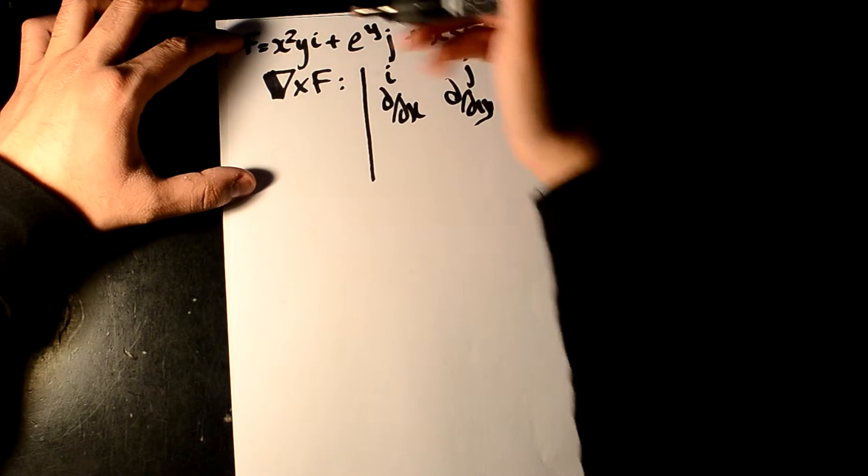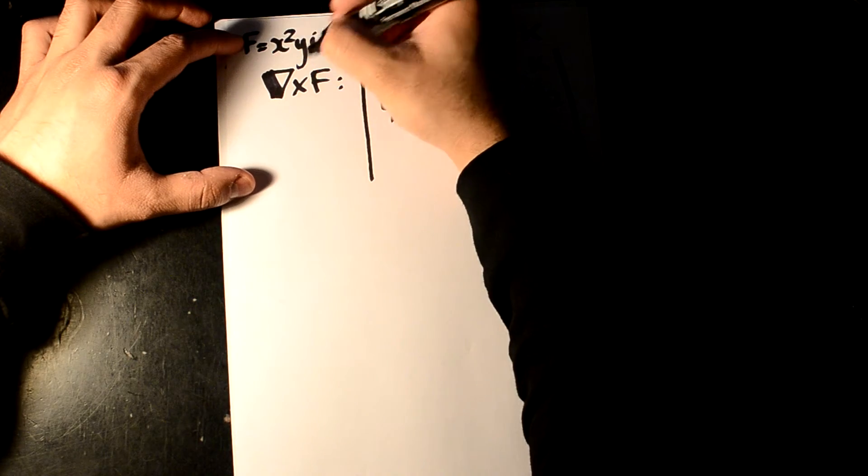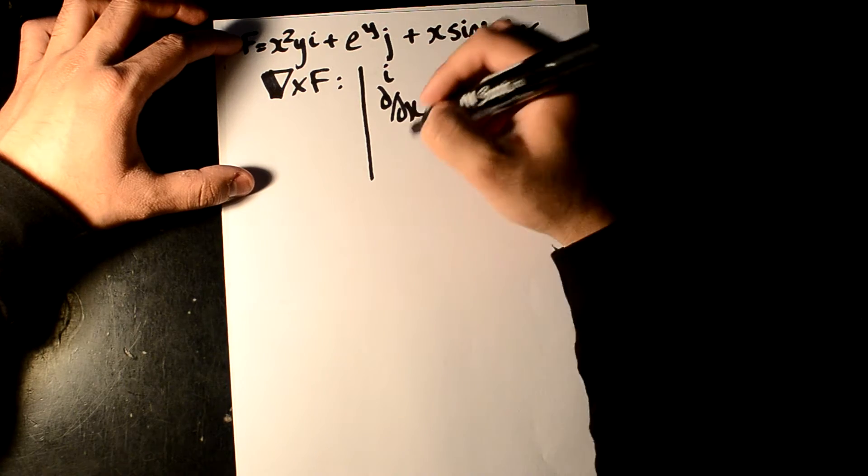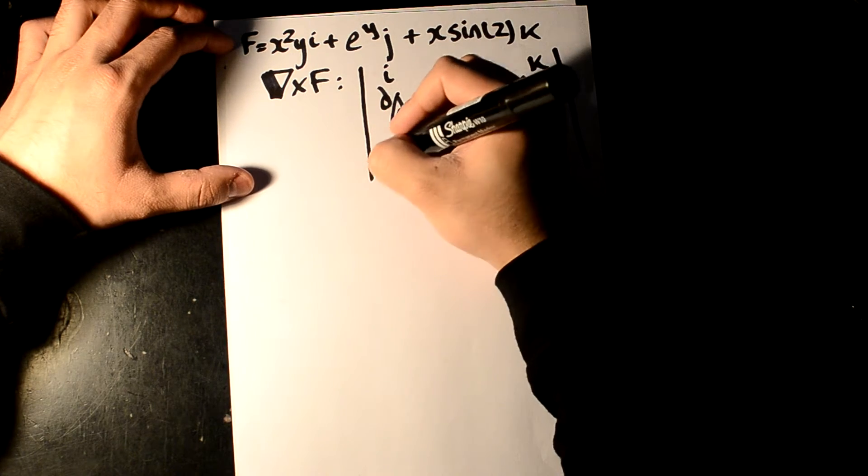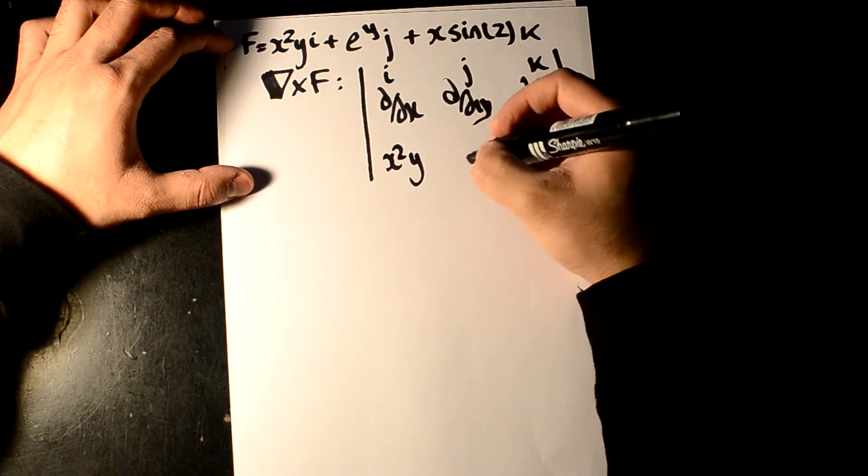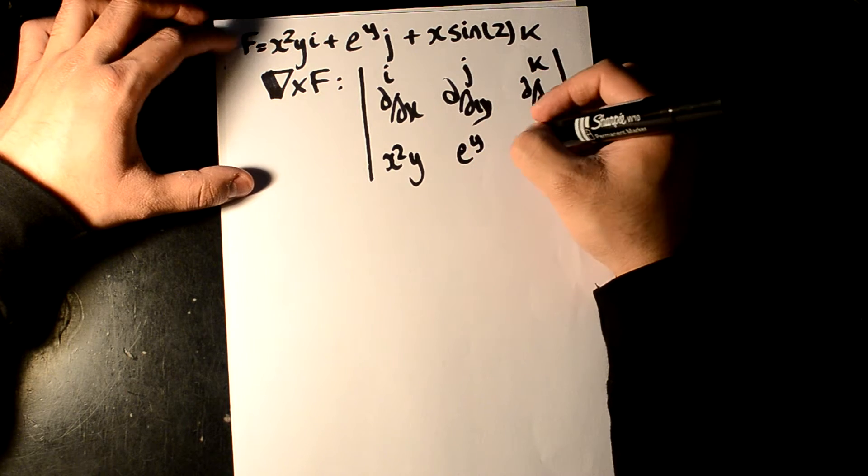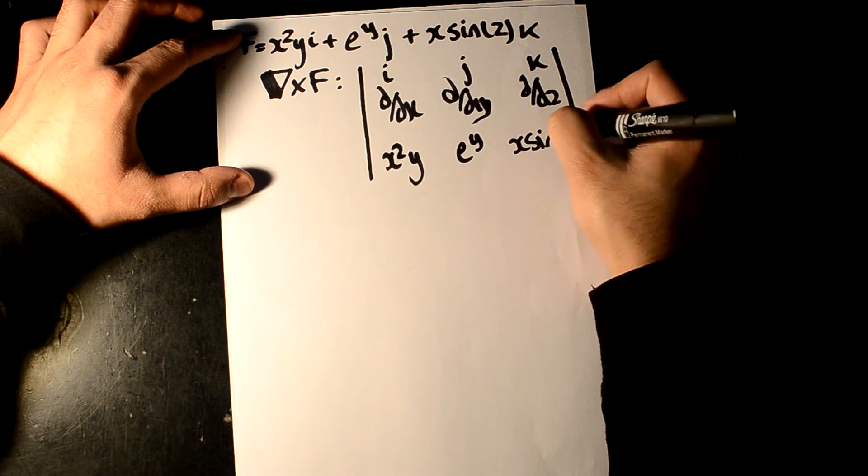And now, you take, let's say, the i term, the j term, and the k term, and you put it here. So you'll have x squared y, then j is e to the y, and then it's x sine z.